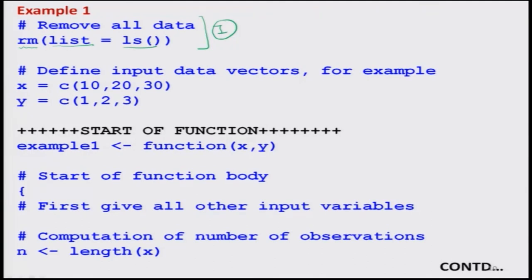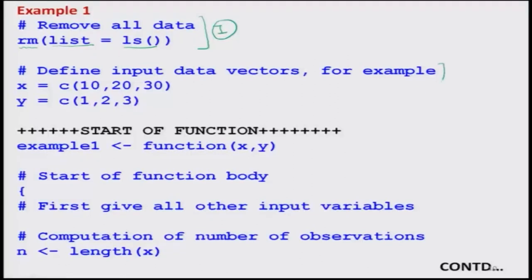The second step is to define the input variables and give the input data vectors — here I provide values for x and y for illustration. Now, after these two steps, we start with the third step: writing the function. I give my program a name, say 'example1', then use the assignment operator, followed by the keyword function with the input variables x and y inside the brackets.